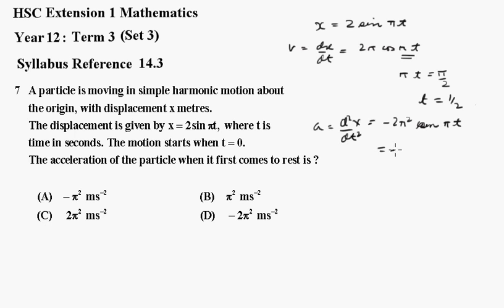Which equals minus 2 pi squared sine pi on 2, putting the t in there. Because that's just 1, it's minus 2 pi squared, which is d.